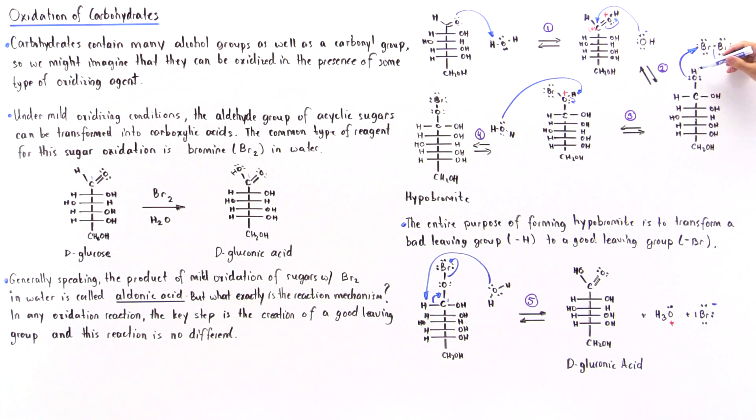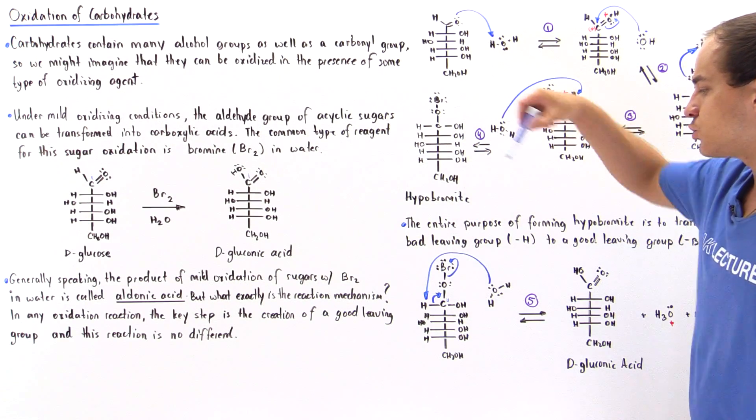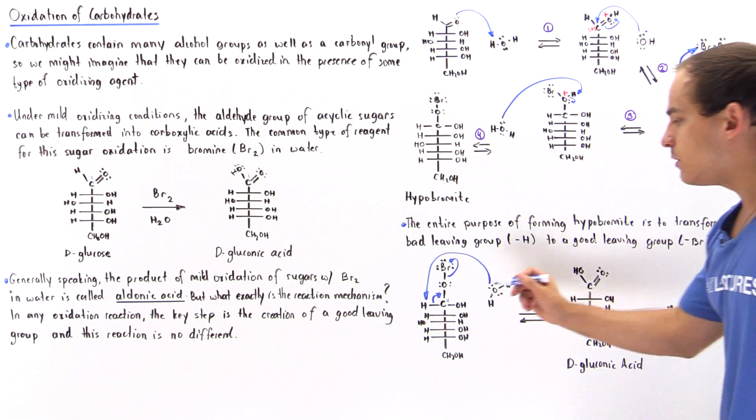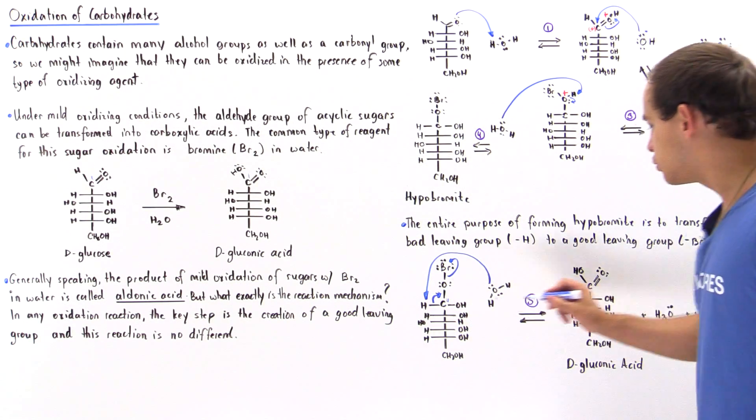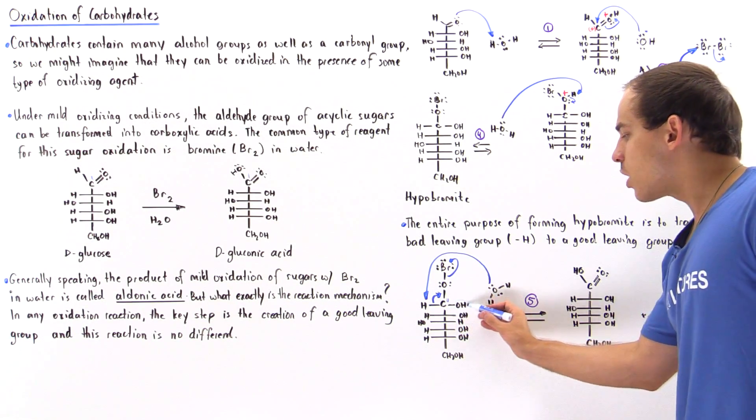If we tried it with this, the H is not a very good leaving group, and so this reaction would not have taken place if we had the H. But since we replaced the H with this good leaving group now, this reaction readily takes place. And we form the carbon-oxygen double bond, and we also have this hydroxyl group.